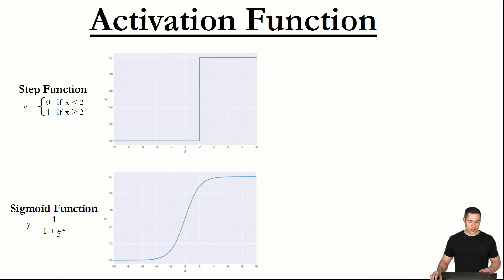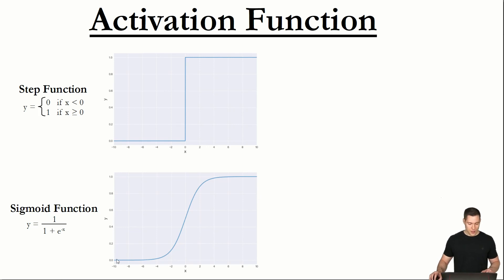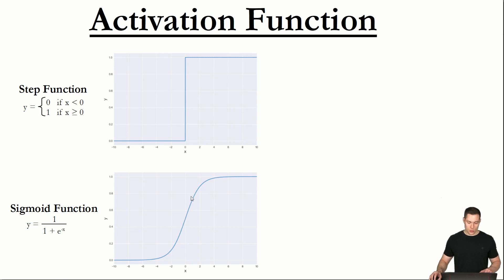That function is going to be the sigmoid function. For now we're not really interested in its actual formula but more in its shape. Both functions look relatively similar — the step function is only shifted slightly to the right because we arbitrarily set the threshold to two. If we set it to zero, both functions basically look the same. For large negative values the sigmoid returns almost zero, for large positive values almost one, with a smooth transition in between. The slope goes from almost zero up to a maximum of 0.25, then back to almost zero.